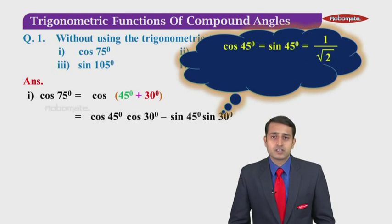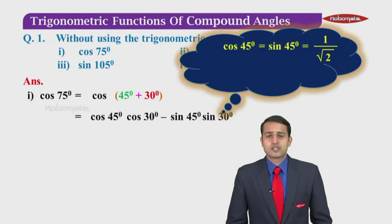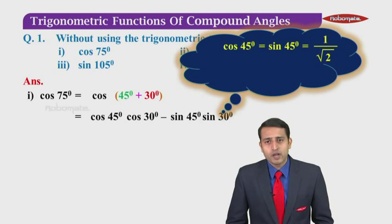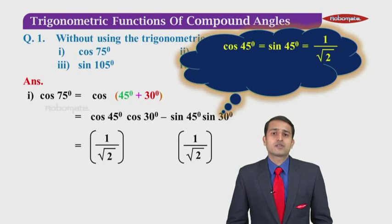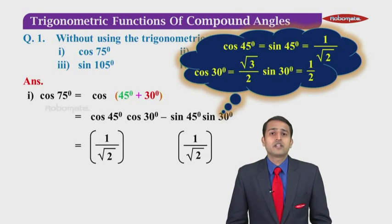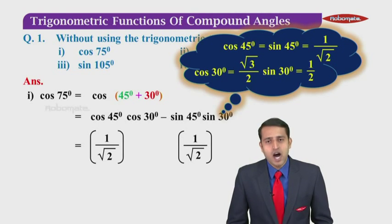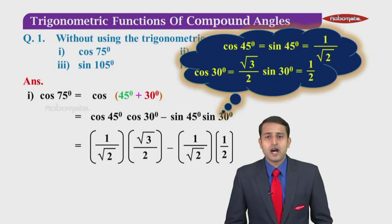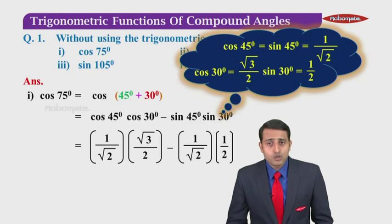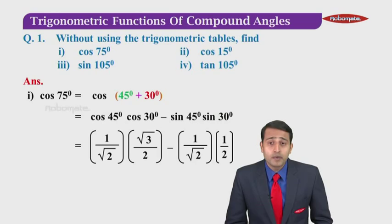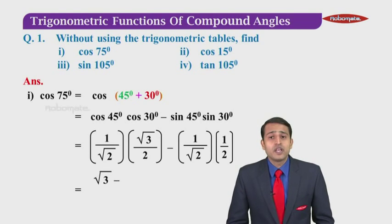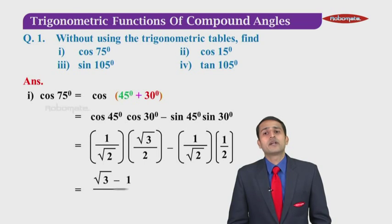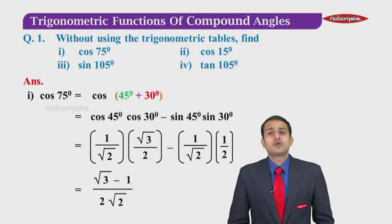Cos 45° and sin 45° are both 1/√2. Cos 30° is √3/2 and sin 30° is 1/2. Substituting these values, we get (1/√2)(√3/2) minus (1/√2)(1/2). If you observe, the denominator is 2√2 and is common to both terms. So the numerator becomes √3 minus 1, and the denominator is 2√2. So cos 75° = (√3 − 1) / (2√2).